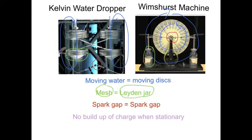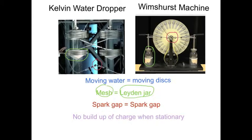Final similarity that I spotted was that there's no buildup of charge when the whole thing is stationary. So in other words, when the Kelvin water dropper, when there's no water flowing, you don't get any charge buildup, and likewise with the Wimshurst machine, if you're not turning the handle then nothing happens. So there's two similarities that got me thinking about how to solve this problem thinking about the Wimshurst machine.